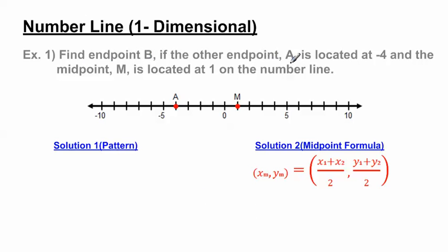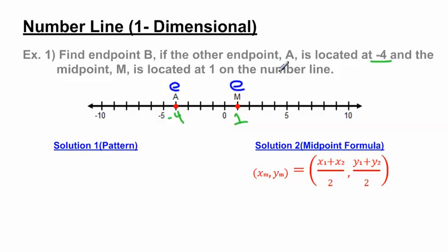Here's the first example: find endpoint B if the other endpoint A is located at negative 4 and the midpoint M is located at 1 on the number line. We know A is at negative 4 and the midpoint is at positive 1. Students often rush this problem and think they're finding the midpoint, but that's improper — we are given an endpoint and the midpoint, and we do not know the other endpoint.